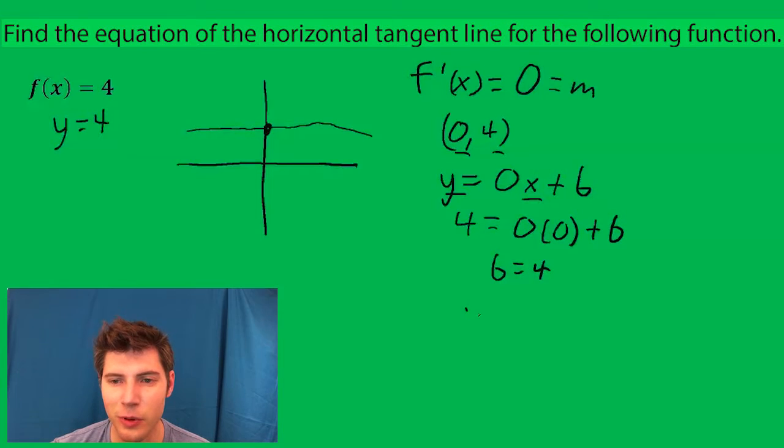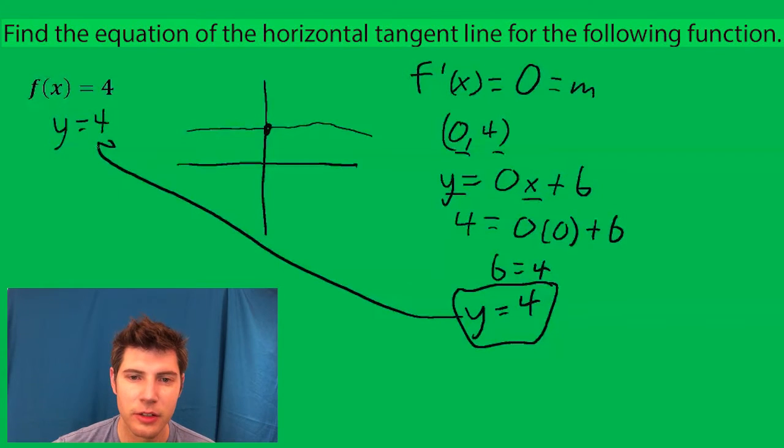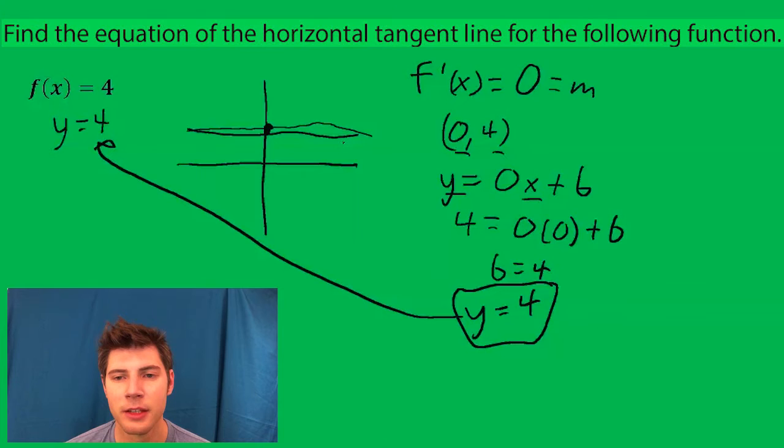So the equation of the line is y equals 4, which is what we said over here. So basically the horizontal tangent line to this line is the line itself because it is a horizontal line. So if that makes sense, I'll talk to you guys soon. Bye.